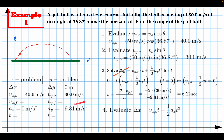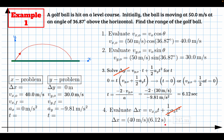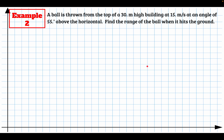Finally, we evaluate the range. Delta x = v₀ₓ·t (no x acceleration). With v₀ₓ = 40 m/s and t = 6.12 s, the range is 245 meters — very close to our conceptual estimate of 240 meters. We did not need the quadratic formula here because delta y was zero, allowing us to factor out t for an easy solution.